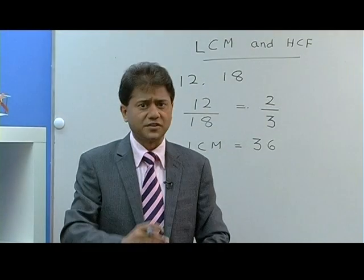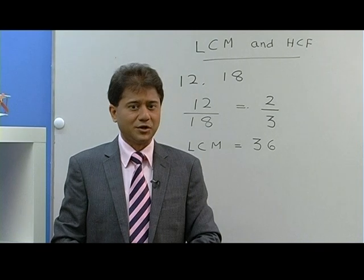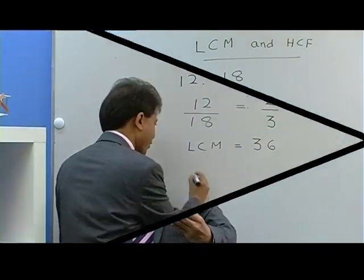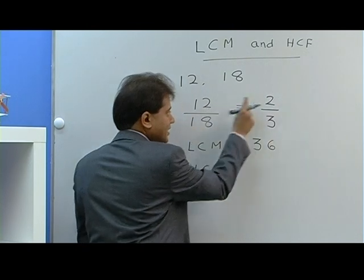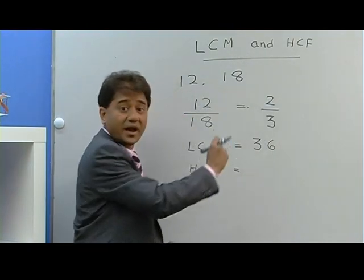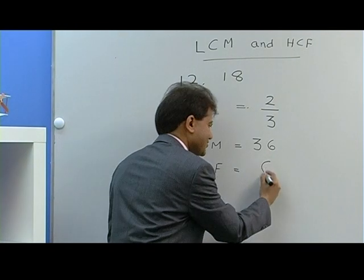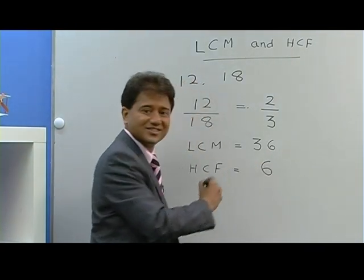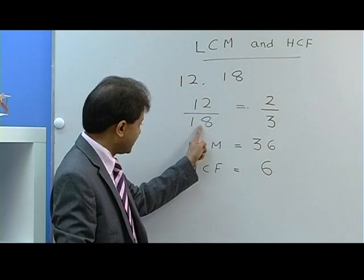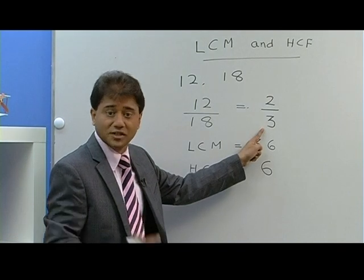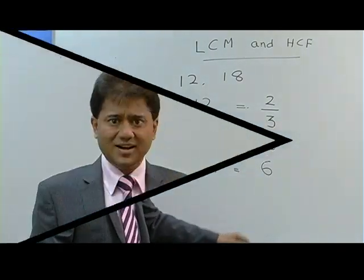The beauty of this method is if you find LCM this way, you get HCF for free. All you have to do is just divide. 12 divided by 2 is 6, and this is your answer. Or if you want to double check, 18 divided by 3 is also 6, and this is your answer.